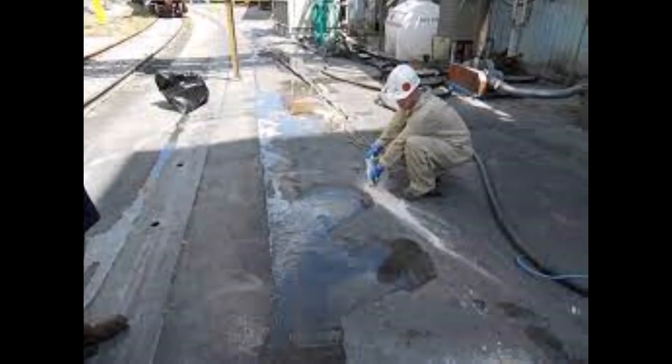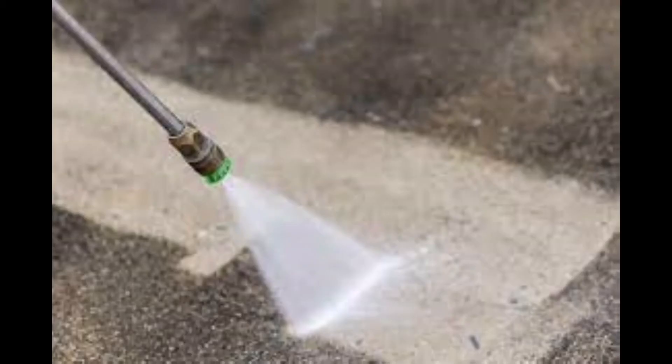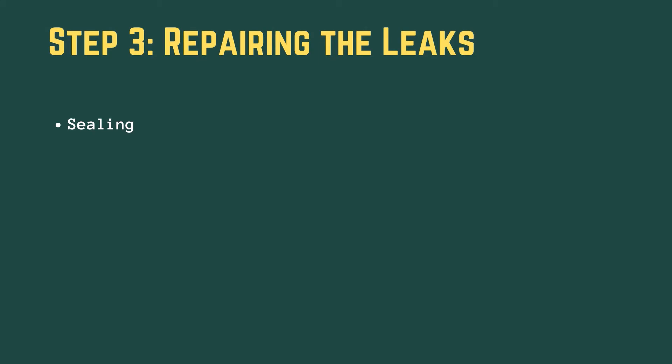Step 3: Repairing the leaks. Once all internal causes of leaks, such as issues with plumbing lines or drainage, are identified, these are the first primary concern that need fixing, after which the porous or cracked concrete roof is addressed. Before performing any method, the entire roof surface must be cleaned using a pressure washer. There are several methods that can be employed to repair cracks in a concrete roof.